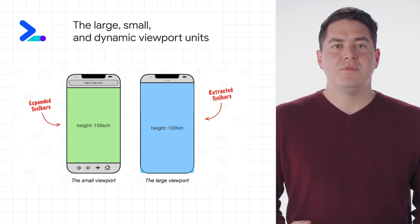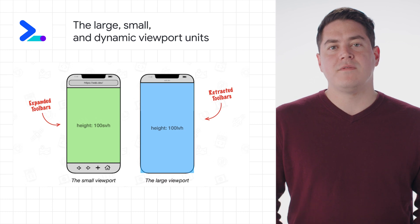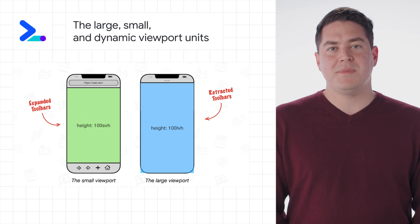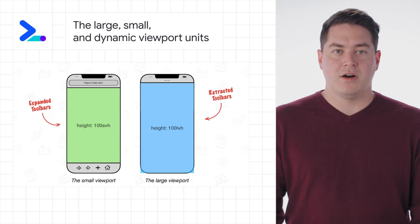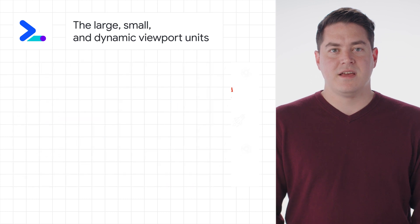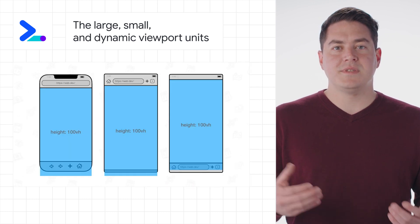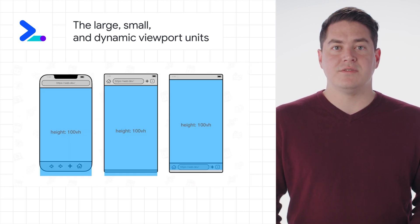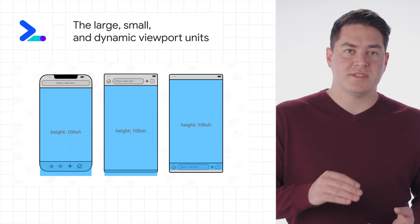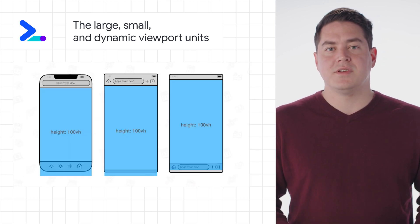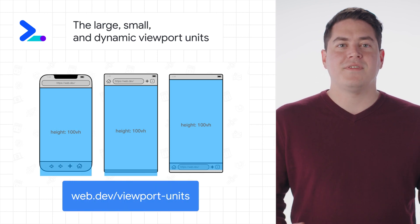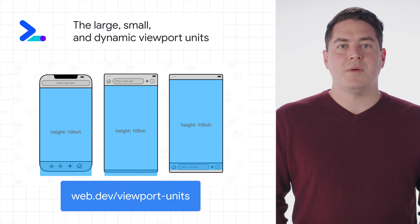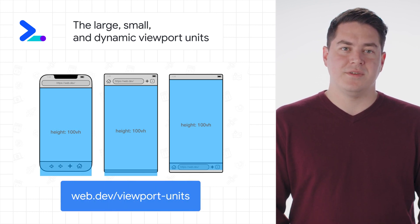There are some new large and small viewport units which can be used to dynamically adjust based on the browser Chrome on mobile devices. There are also some dynamic units used to show the smallest size depending on if the toolbars are expanded. You can find out more at web.dev/viewport-units.